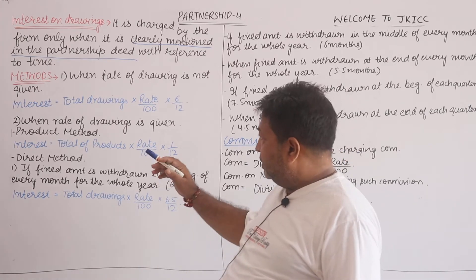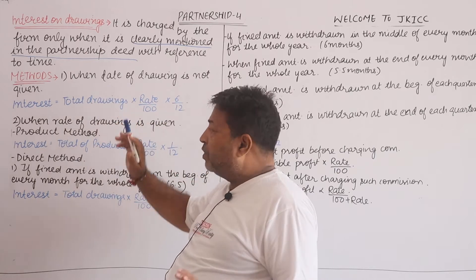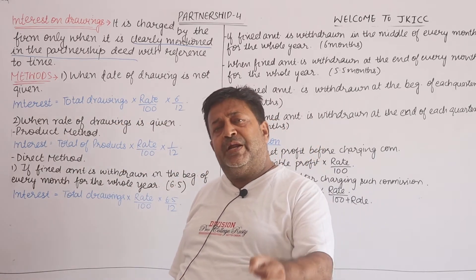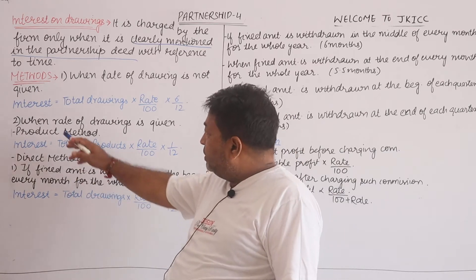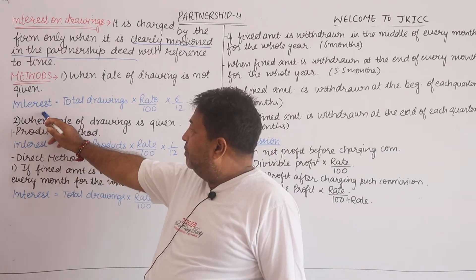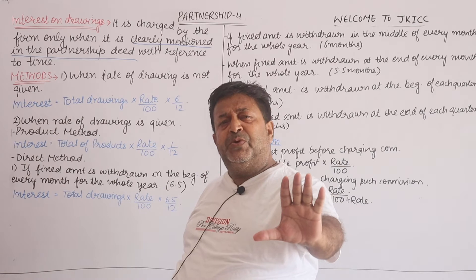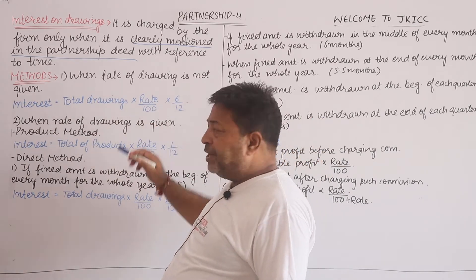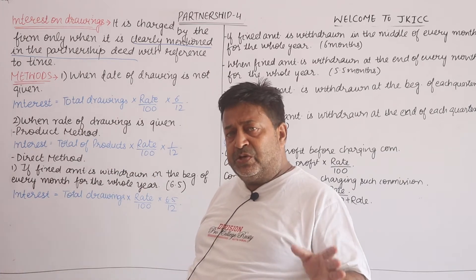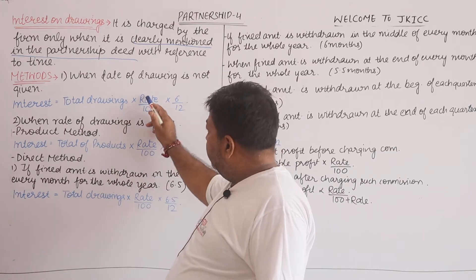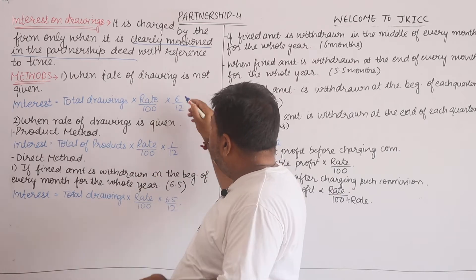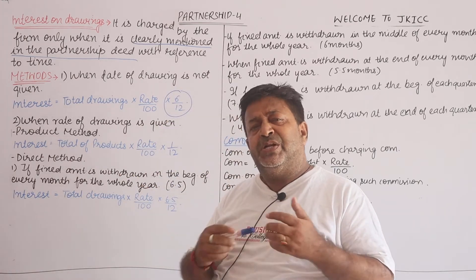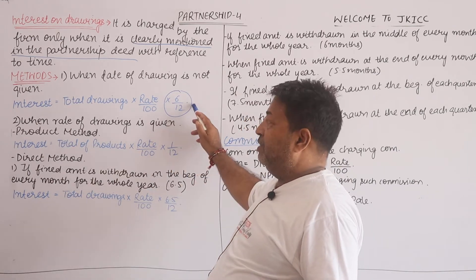First case: when the date of drawings is not given. Only the total amount drawn by the partner during the year is given. In that case, we multiply the total drawings by the rate — the rate is always mentioned, like 10% or 12% — divided by 100, and then multiply by 6/12. Because the date is not mentioned, we assume the average, which is 6/12.